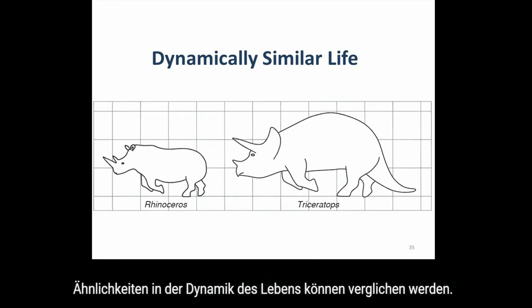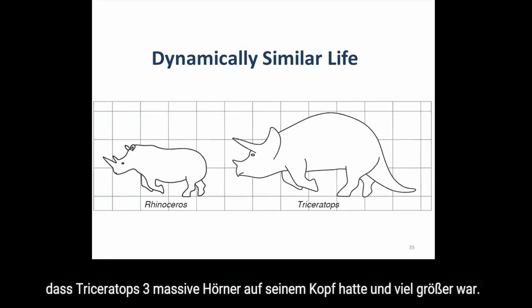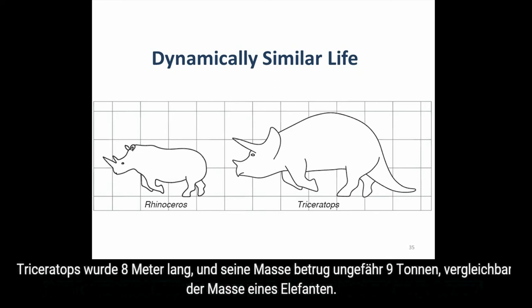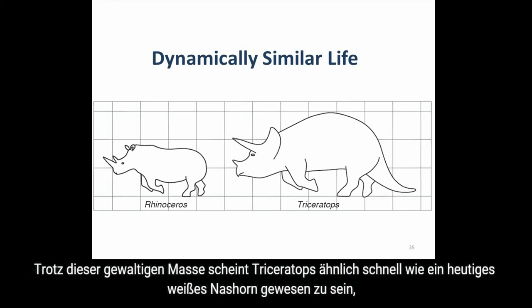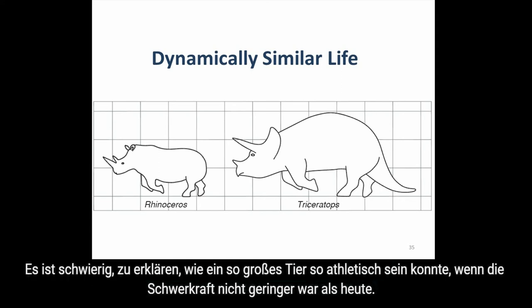Dynamically similar life can be compared. Triceratops was similar in appearance to a present-day rhinoceros, with the most notable difference being that Triceratops had three massive horns on its head and it was much larger. Triceratops grew to 8 meters in length and its mass was about 9 tons, similar to an elephant in mass. Despite its elephant size, the Triceratops seems to be dynamically similar to a present-day white rhinoceros and should have galloped in a similar manner. It is difficult to explain how such a large animal was so athletic unless gravity was lower.